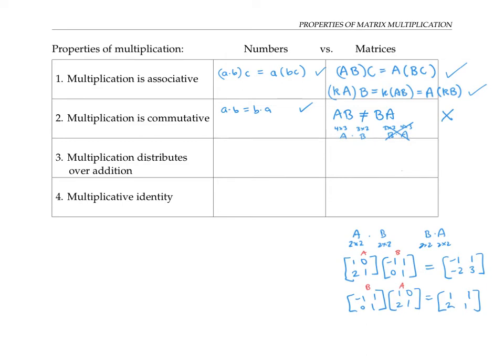For numbers, multiplication distributes over addition. That is, A times (B plus C) is the same thing as A times B plus A times C. Also, (B plus C) times A is the same thing as B times A plus C times A. The same distributive properties hold for matrix multiplication. I won't prove that property here, but it can be proved by focusing on each row and column separately.